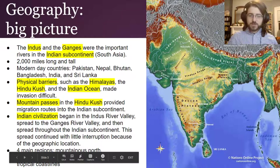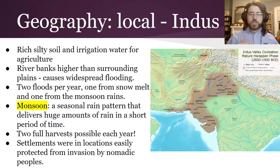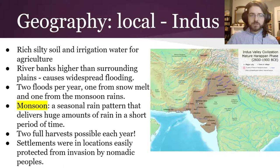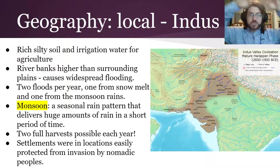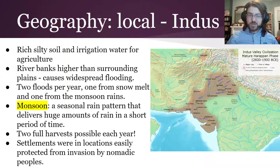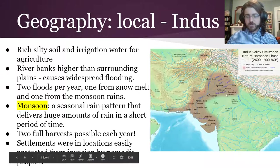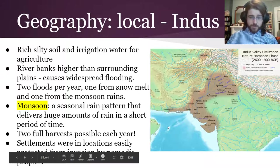For this ancient video we'll focus on the local geography of the Indus River Valley. The major sites are Harappa and Mohenjo-daro. The area is full of silty soil and water for irrigation. The river banks are actually higher than the surrounding plains, so when the river floods it spreads down and out over the farmland — causing widespread flooding that acts as natural fertilizer. They had two floods per year: one from snowmelt from the mountains, and one from the monsoon, a seasonal rain pattern from the Indian Ocean. This gave them two full harvests per year, so they had very reliable food and lots of it.